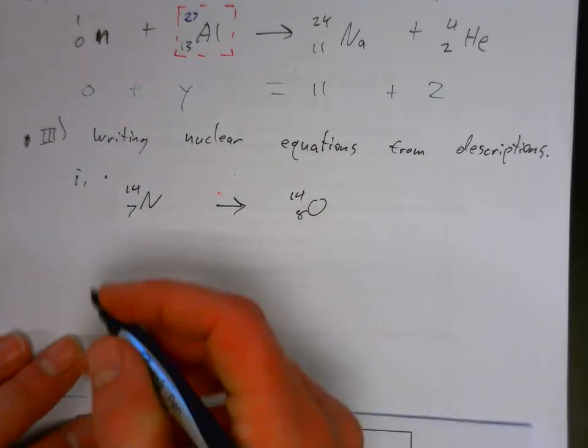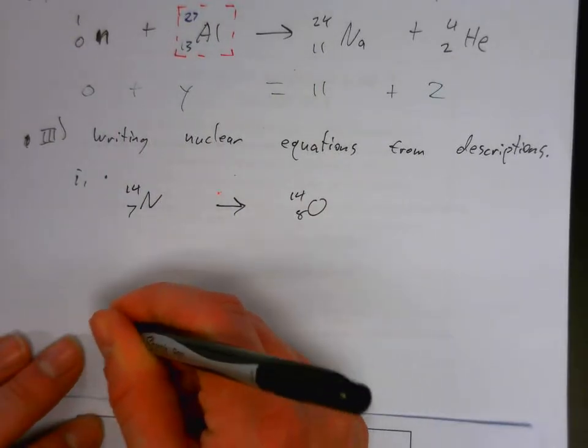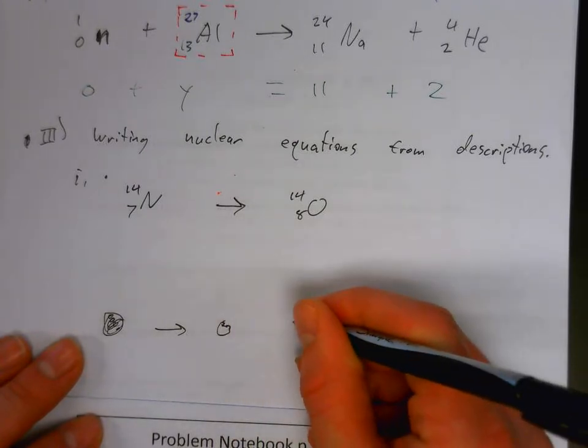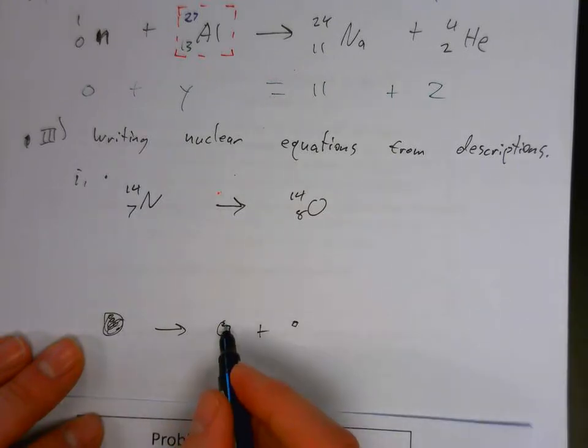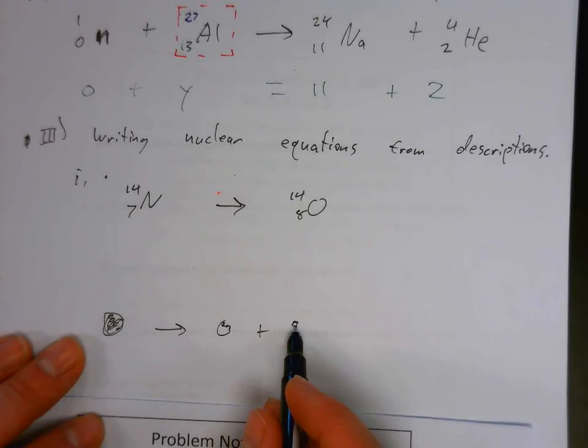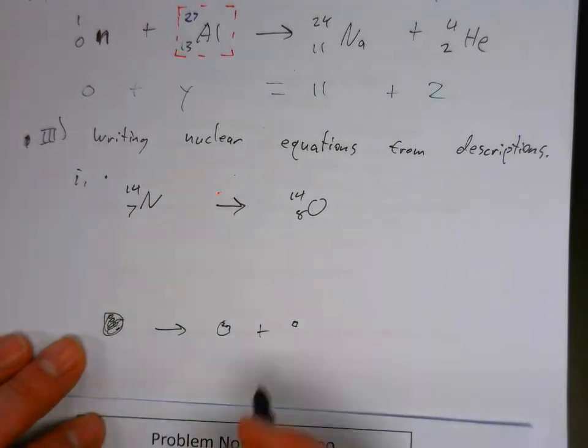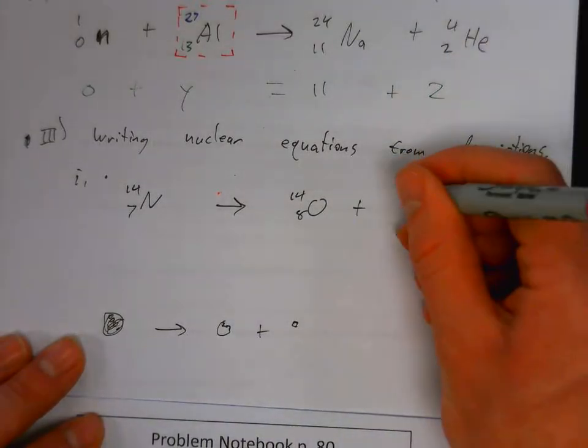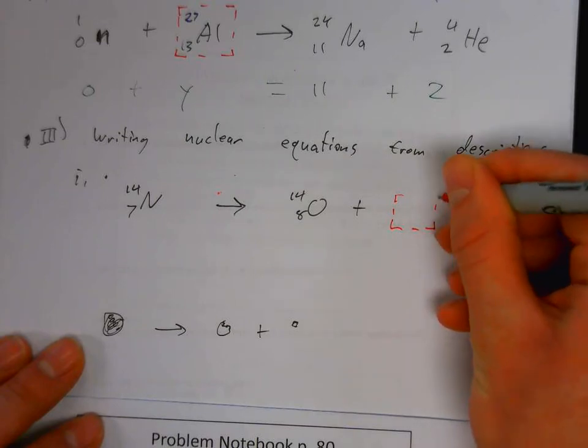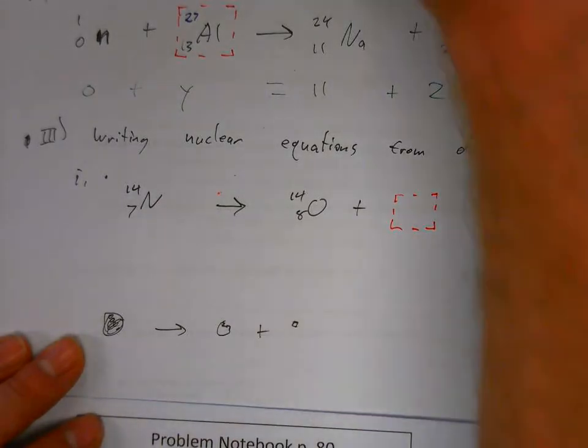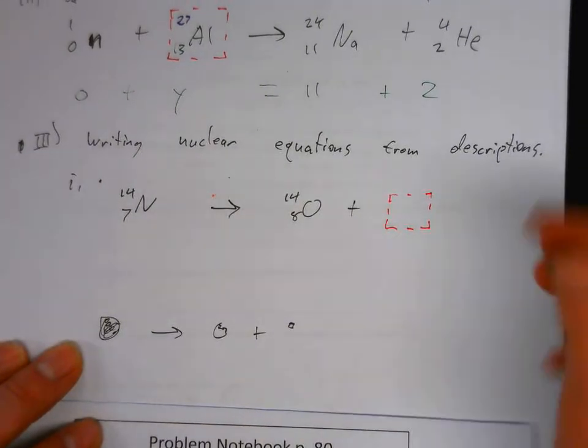We have one thing and it emits something else, so a piece comes out. We can see that when a particle gets emitted, it's shown on the right side as a product. If it said it was added, it would be on the left side, but since it's emitted, it's being released.